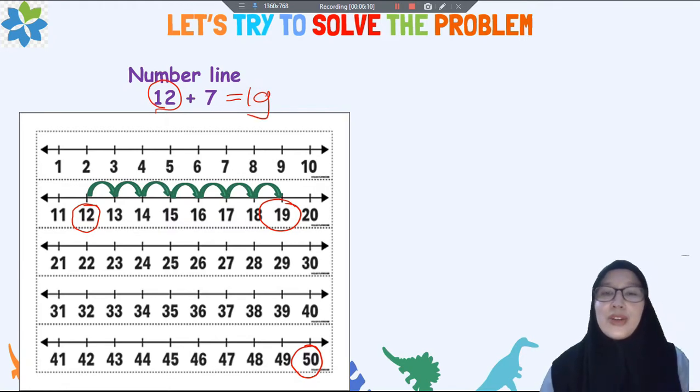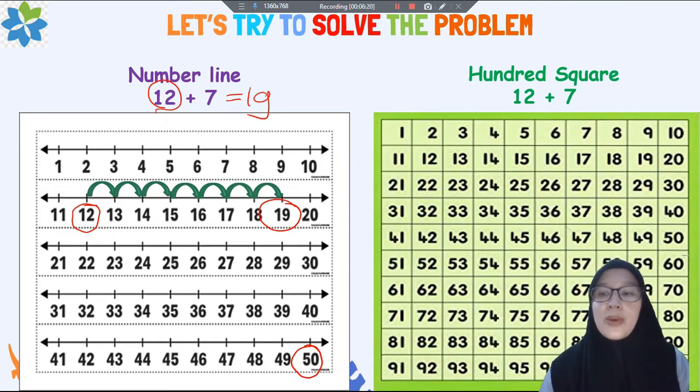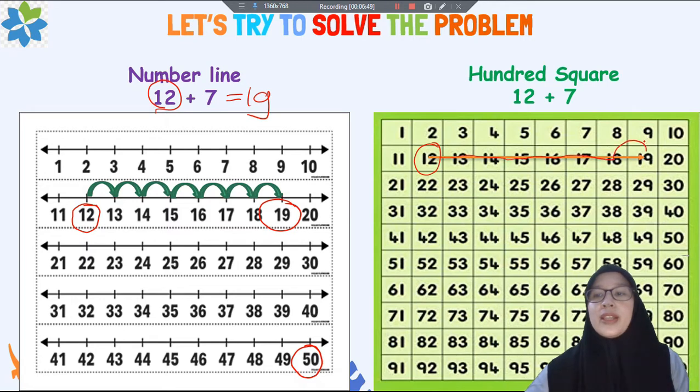And then I will show you the second way and I will use 100 square. Sekarang Miss akan menggunakan 100 square to find the result of 12 plus 7. First find out 12 in the box. I will help you to find it. This is 12. And then please go to the right for 7 steps too: 1, 2, 3, 4, 5, 6, 7. 19 right? Jadi hasilnya sama, 19. It means that Ayla has eaten 19 sweets. Jadi Ayla sudah memakan 19 permen.